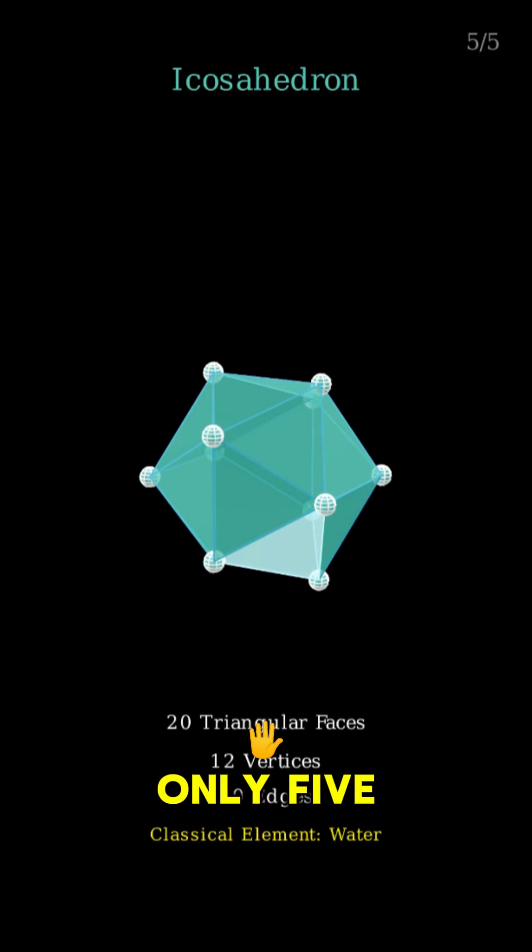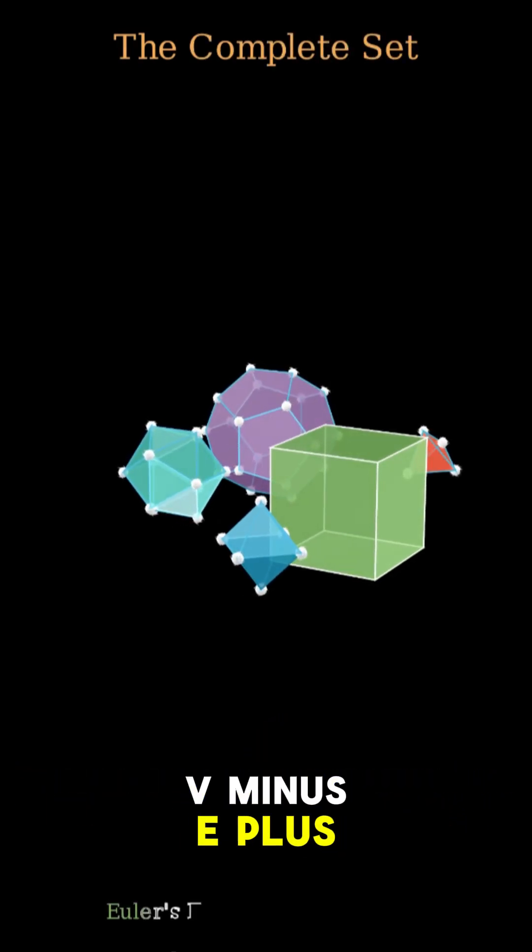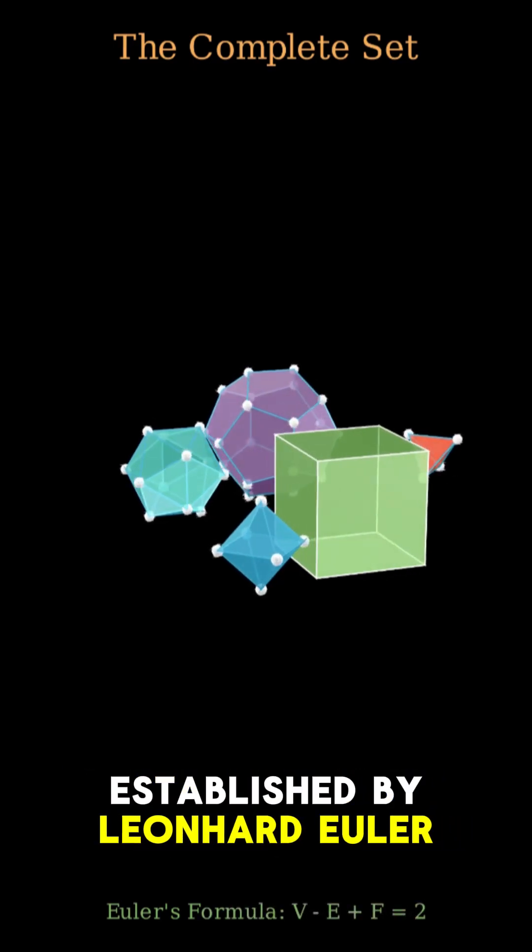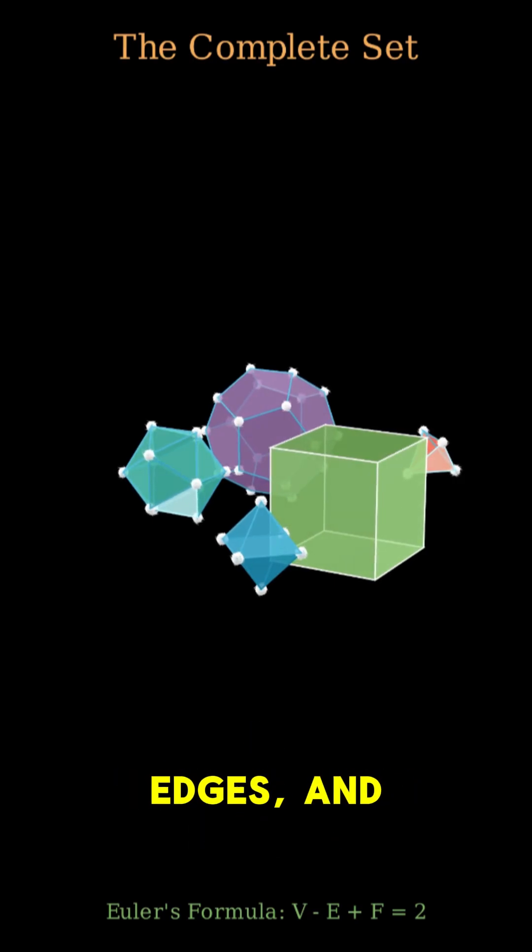Remarkably, only five regular polyhedra can exist in three-dimensional space. Euler's formula, V minus E plus F equals 2, established by Leonhard Euler in 1758, tightly binds faces, edges, and vertices, ruling out any others.